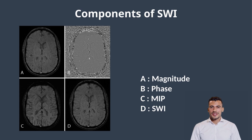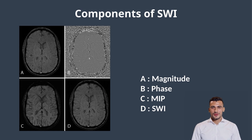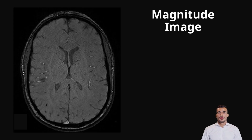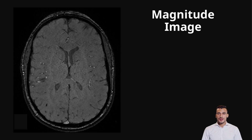SWI is made up of a few important image components, each giving us different information. They include the magnitude image, phase image, susceptibility weighted image, and minimum intensity projection — the minIP image. The magnitude image is the first and most basic image — it's like the regular gradient echo image. It shows the overall brain anatomy and signal intensity. If there's something that disturbs the magnetic field like blood or iron, you may already see a bit of signal loss here, but it's not very sensitive.